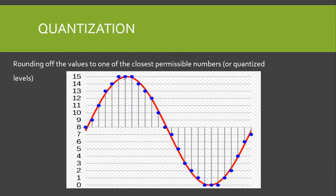Next is quantization. Quantization is basically rounding off the values to one of the closest permissible numbers, or quantized levels. If we look at the diagram, we have 16 quantized levels here, denoted by L. So L is equal to 16.